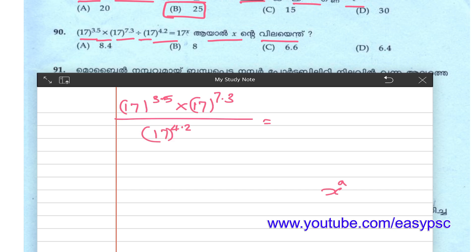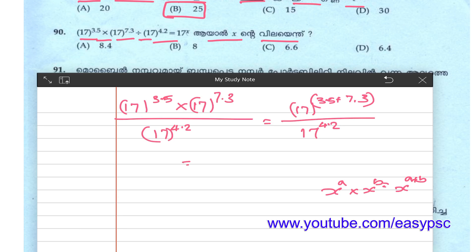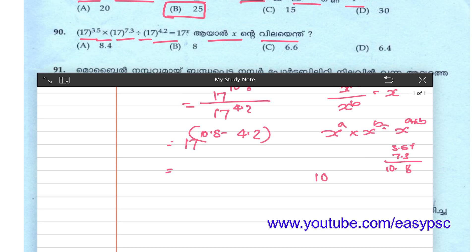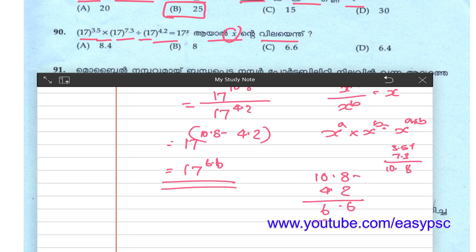x raised to a multiplied by x raised to b equals x raised to a plus b. 18 raised to 3.5 plus 7.3, by 18 raised to 4.2. 3.5 and 7.3. 18 raised to 17.8 by 18 raised to 4.2. x raised to a by x raised to b equals x raised to a minus b. 18 raised to 17.8 minus 4.2 — that is 18 raised to 6.6. Option C: 6.6.